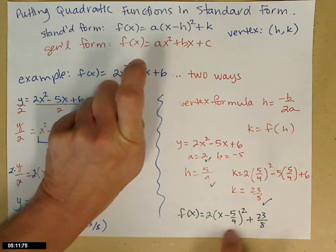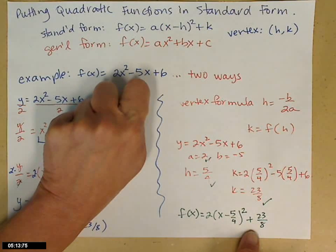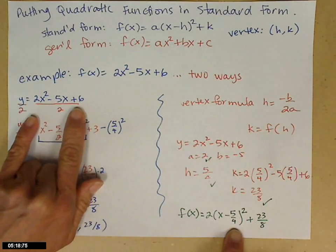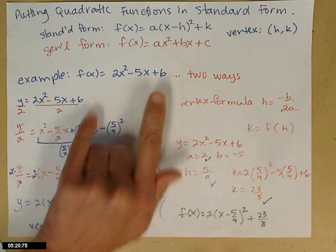And if you don't believe me, you square up that binomial, distribute the 2, bring in the 23 eighths, and I promise we get right back here. All right, good luck.